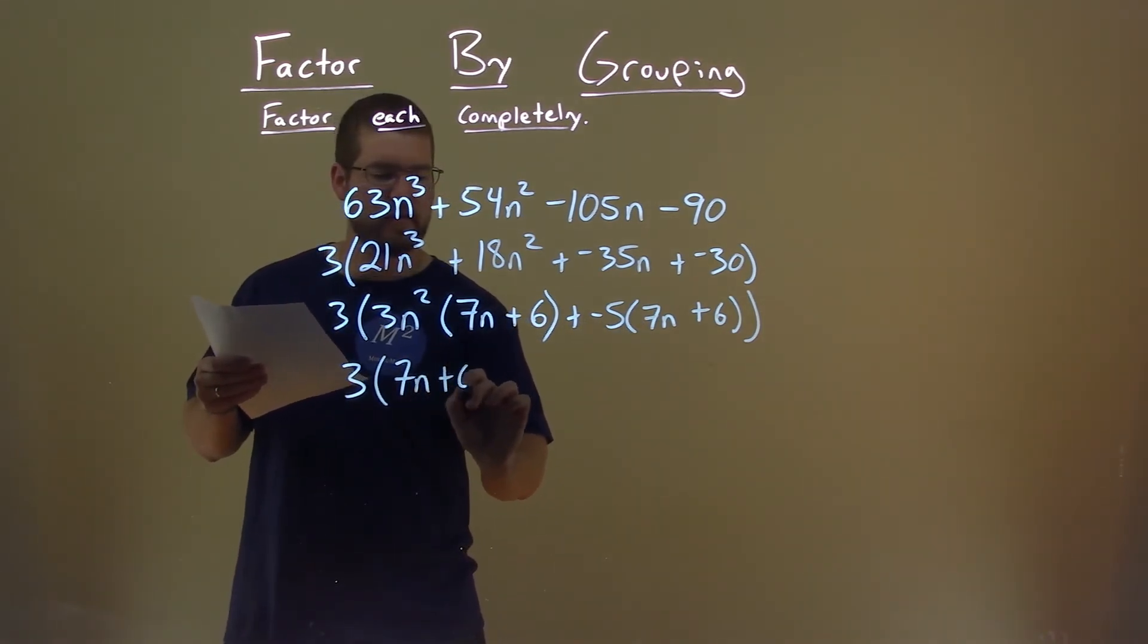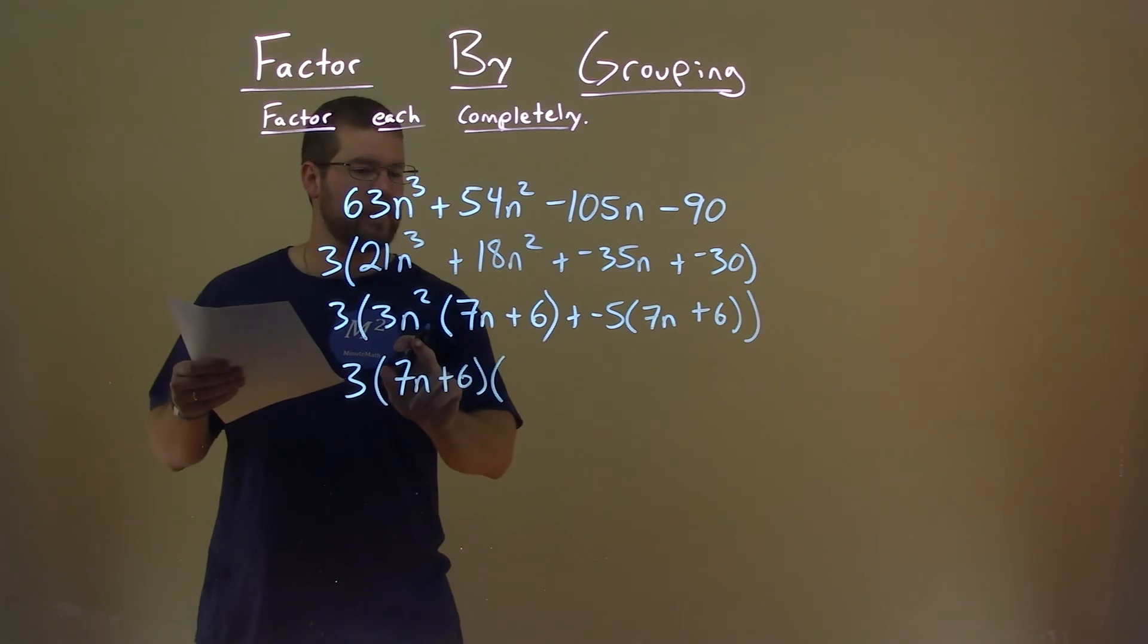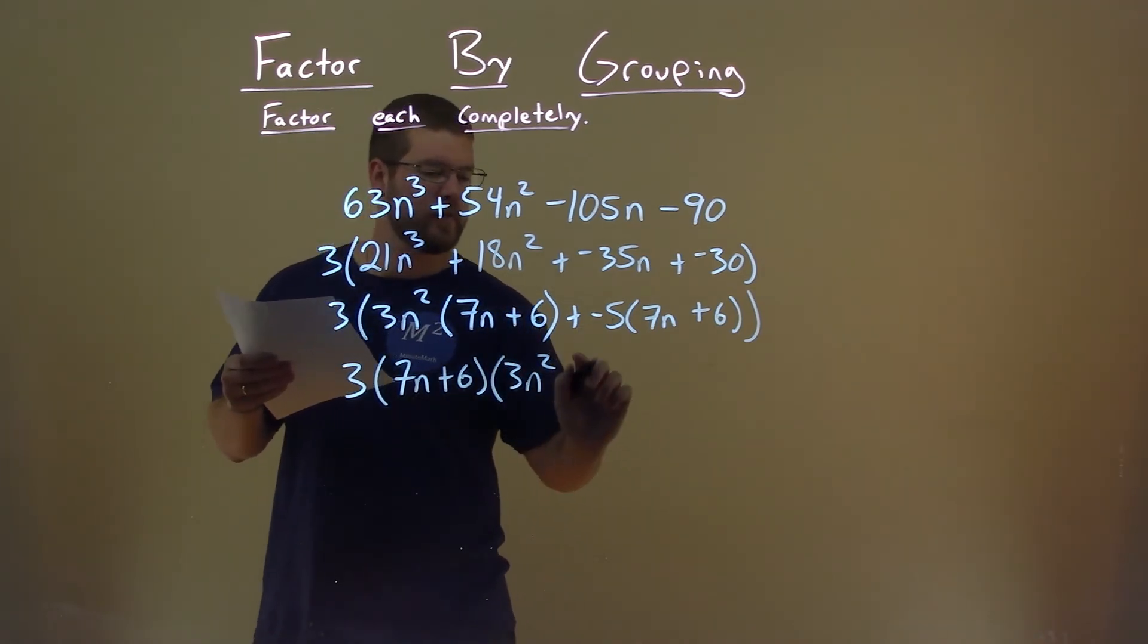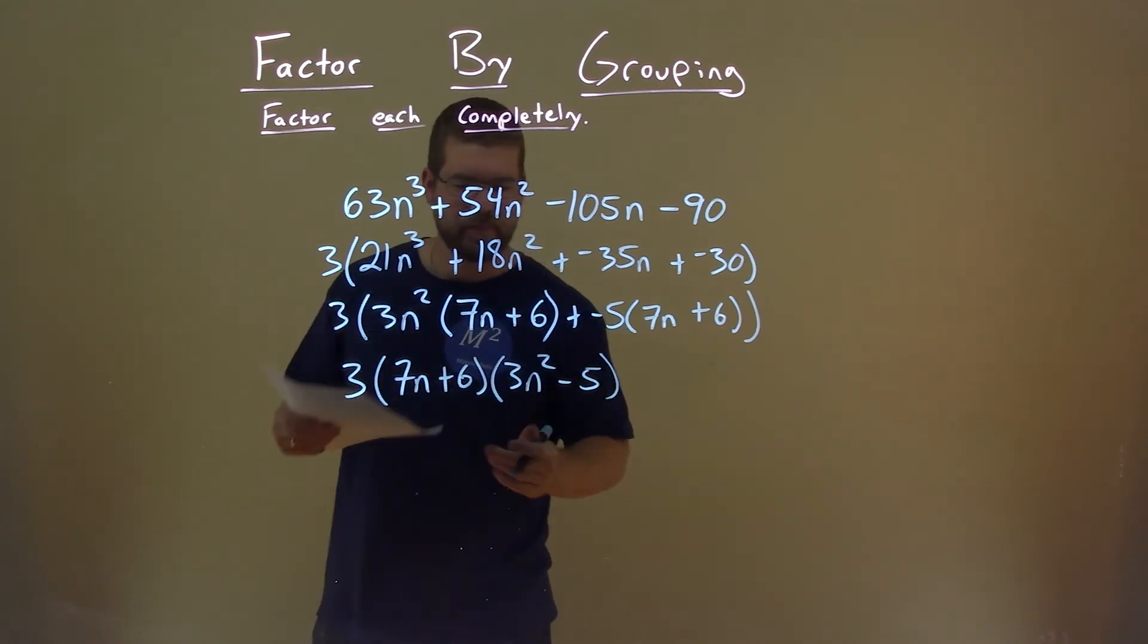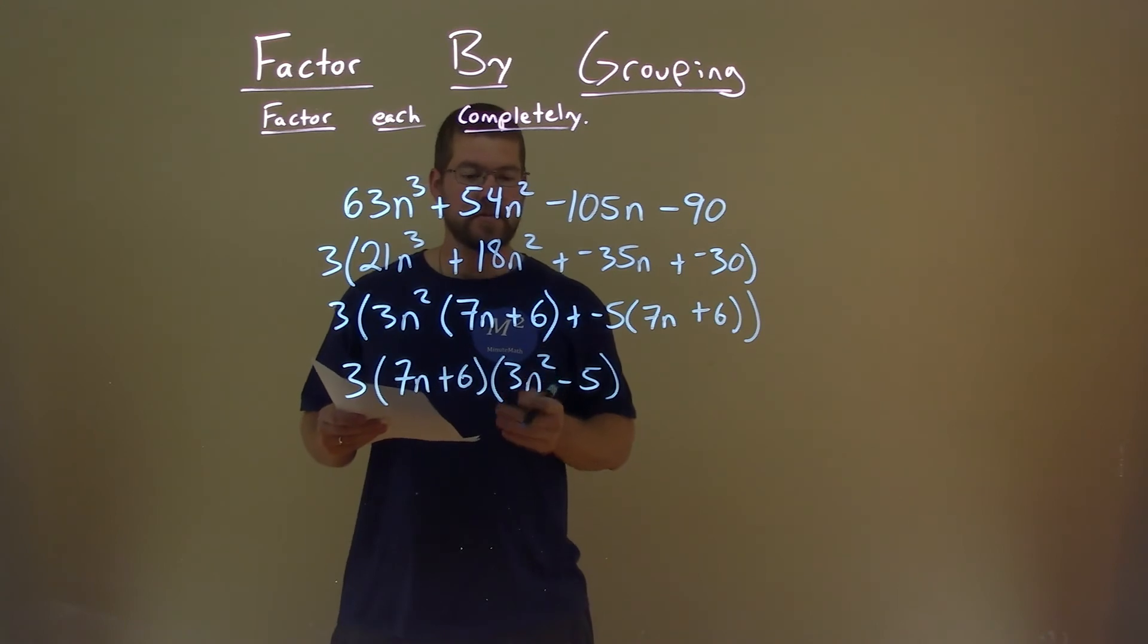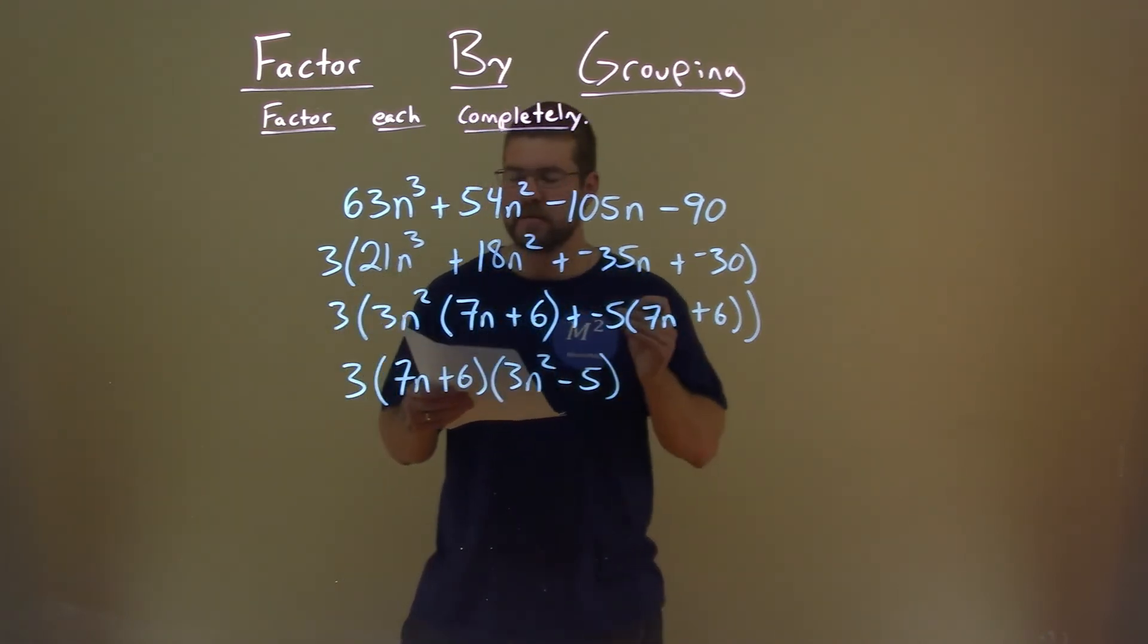for both of them, 7n plus 6 here, what are we left with? 3n squared plus a negative 5 or minus 5. And there we actually have our final answer: 3 times 7n plus 6 times 3n squared minus 5.